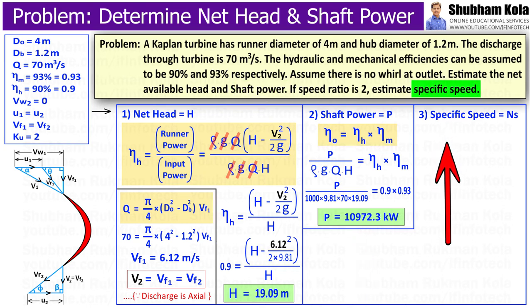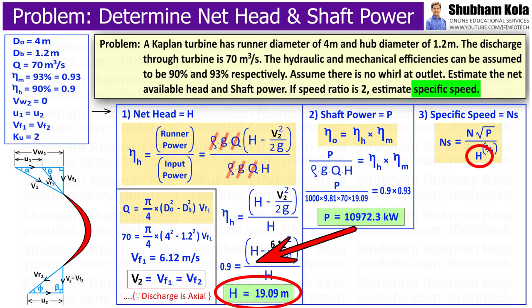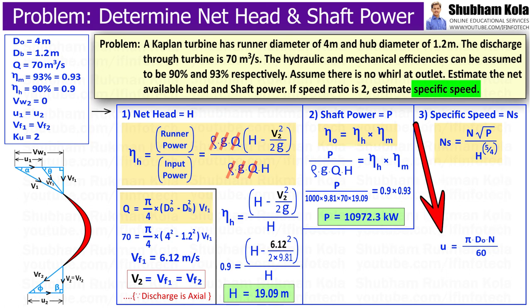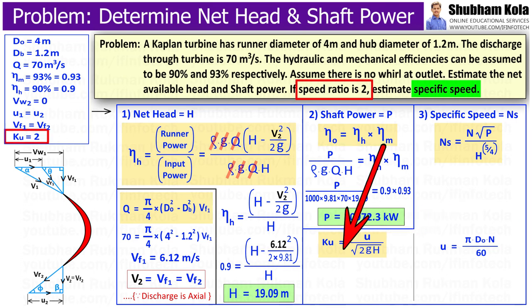Next, we want to calculate the specific speed of the turbine, which is given by the specific speed formula. We have already found shaft power and net head H. Rotational speed N can be calculated from the tangential velocity formula: u = π × D_O × N / 60, where outer diameter D_O is given in the question, and u can be calculated from the speed ratio.